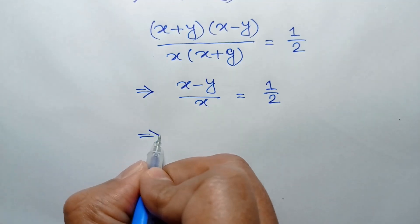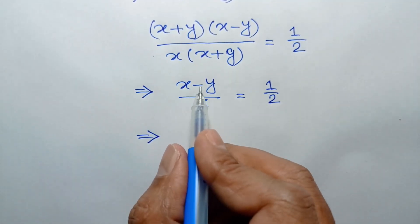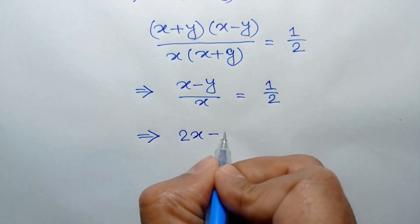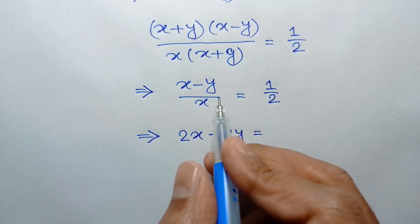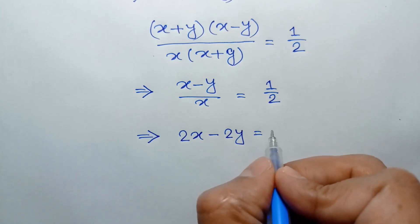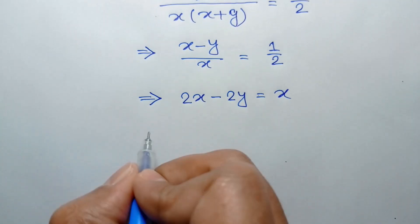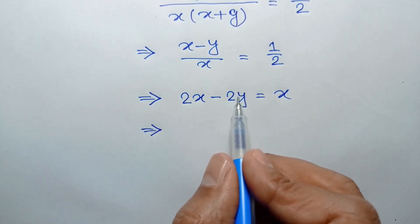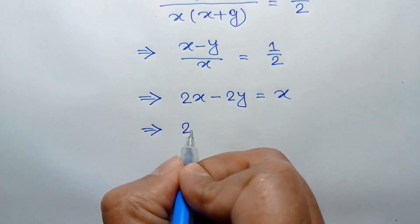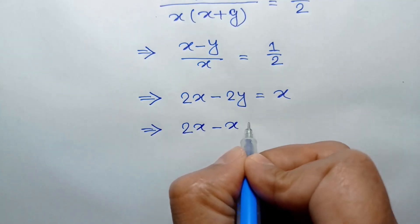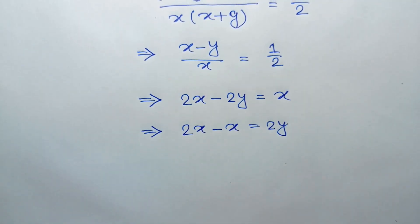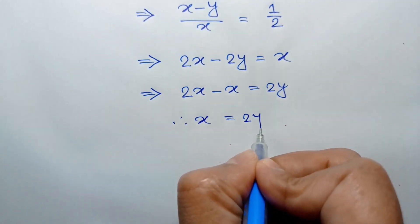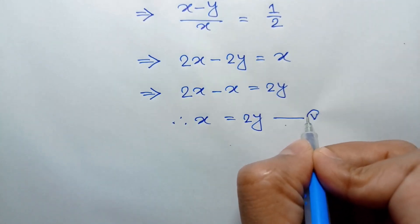Applying cross multiplication, we can write 2 times x minus y equals x, which gives 2x minus 2y equals x. Taking x to the left side and 2y to the right side, we get x equals 2y. Call it equation number 5.